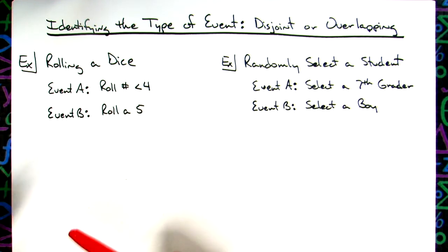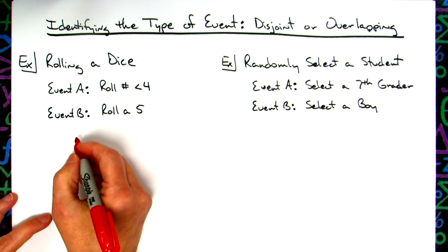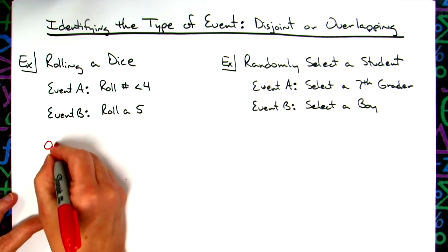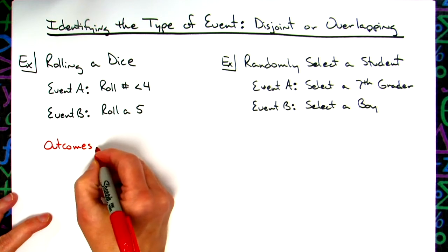The best way to determine whether it's disjoint or overlapping, and to justify your answer, is to list the outcomes. So I'll write the possible outcomes for event A.